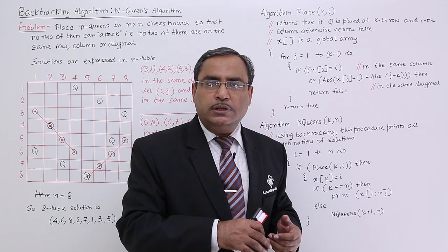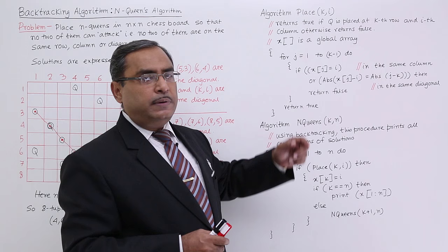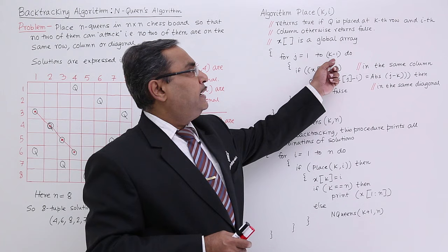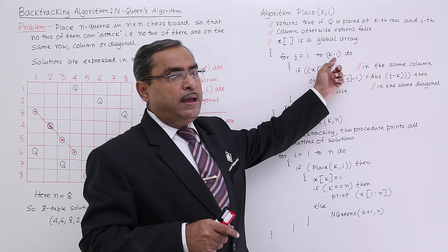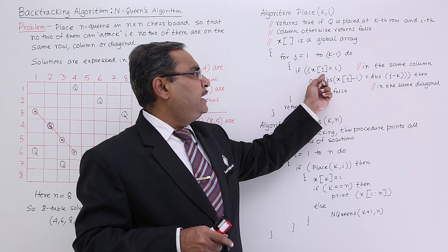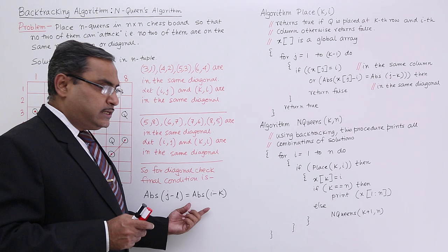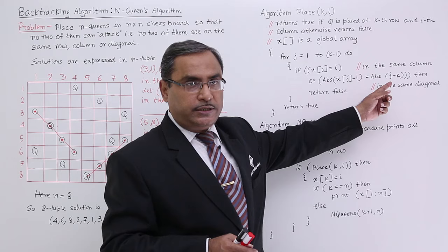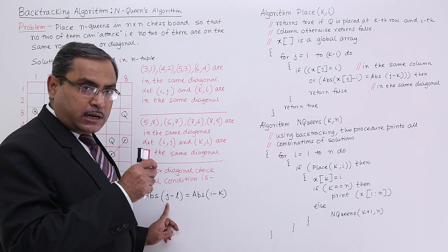It returns true if queen is placed at the kth row and i-th column, otherwise returns false. x is a global array holding the solution. For j equal to 1 to k minus 1, I shall have to check the previous k-1 queens where they got placed. That is why for j equal to 1 to k minus 1 — because I am judging for queen number k, the previous queens will be ranging from 1 to k minus 1. If x[j] equals i, that means the i-th column is already filled up by one of the earlier queens.